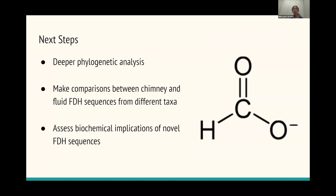And so some next steps would be to do a little bit of a deeper phylogenetic analysis to determine statistically how significant these deviations are in between the fluids and the chimneys. And I'd also like to make comparisons between the chimney and fluid FDH sequences between different taxa. So looking specifically at methanogens and specifically at sulfate reducers and then comparing them for instance. And then like I said before, I'd like to kind of look deeper at whether novel pathways in biochemistry could be sort of uncovered when you look at these different modes of metabolizing formate, especially in different locations on the hydrothermal vent, because this implies a lot of diversity, even within one small section of the ocean.